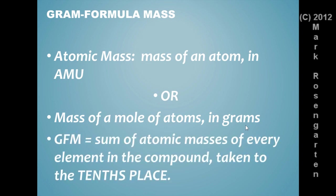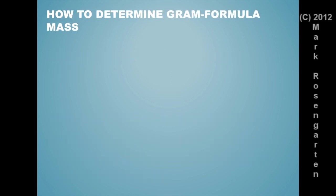The gram formula mass is the sum of atomic masses of every element in the compound taken to the nearest tenth. And the reason we don't go to the nearest whole number, the reason we take it to the tenths, this way we have an extra digit, we have an extra significant figure. And we're not robbing ourselves of significant figures when it comes time to do calculations. So take your formula mass to the tenths place and be consistent.